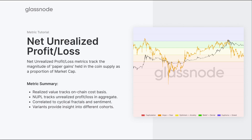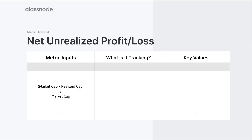We can also use different variants of the net unrealized profit and loss to understand what's going on within different cohorts — whether entity adjusted, short-term holders, or long-term holders. In terms of metric inputs, it's principally the difference between the market cap and the realized cap — the spot value versus the stored value of the network — divided by the market cap, normalizing to present as a fraction of the overall market cap.